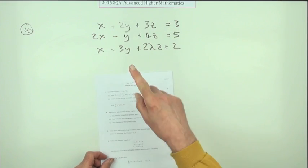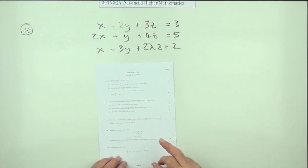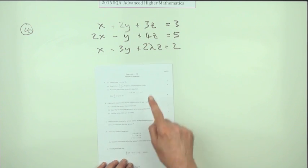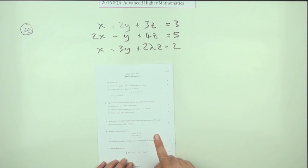Question 4 from the 2016 Advanced Higher Maths. The Gaussian Elimination. For 4 marks, use Gaussian Elimination to find the value of lambda which leads to redundancy.